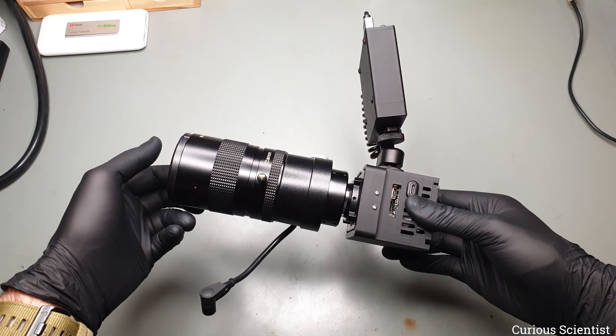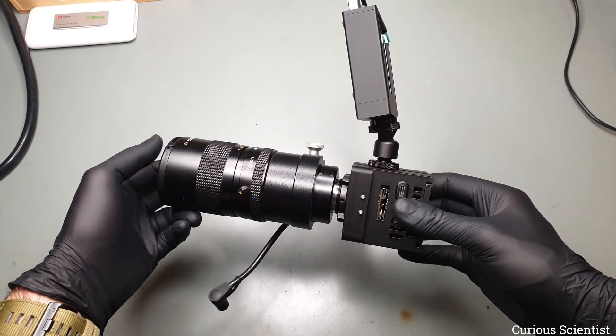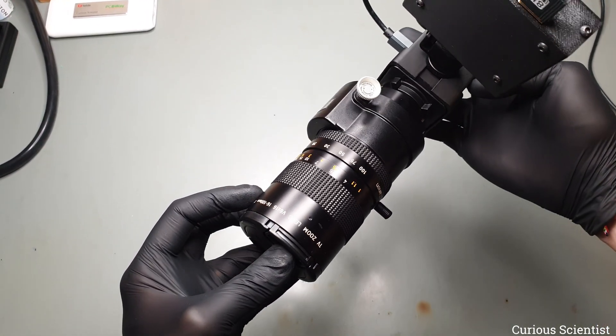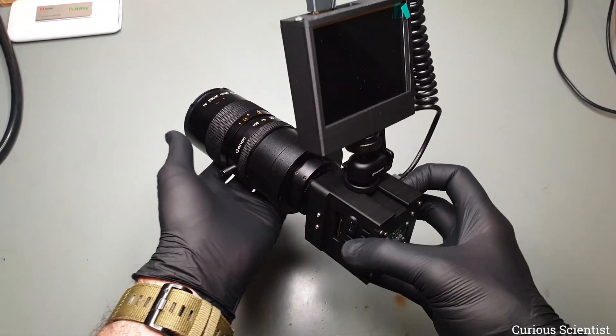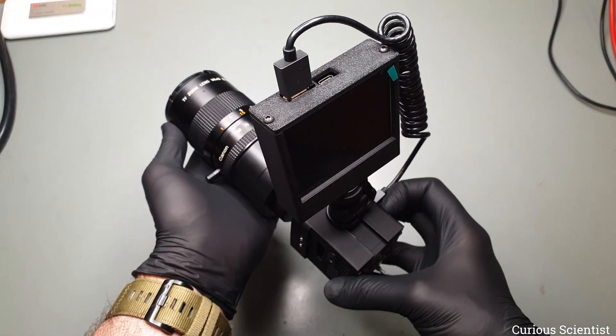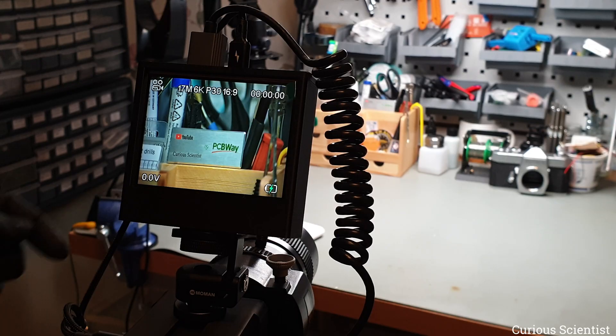For example this TV zoom lens is significantly larger than the previous fixed focal length one. It is more than 2 times larger than the camera module, but it has a relatively large zoom range and a quite nice image quality. It is a fun lens.